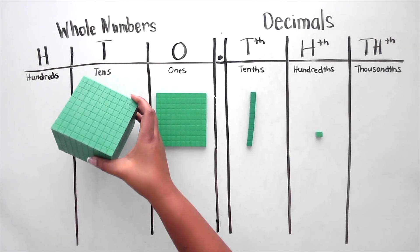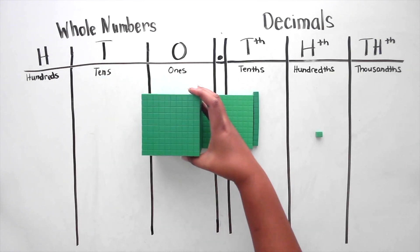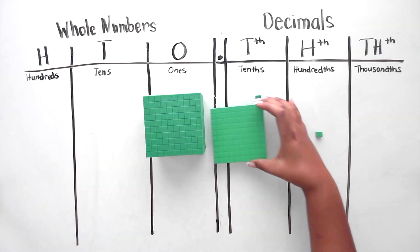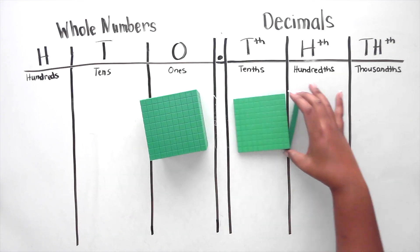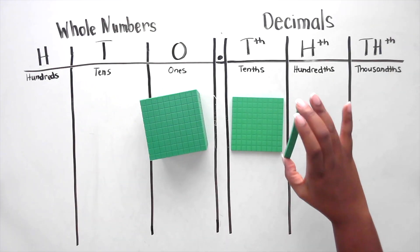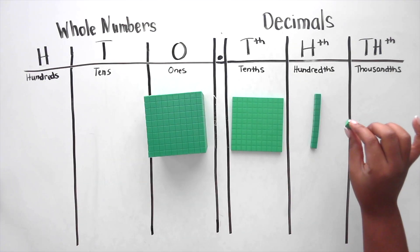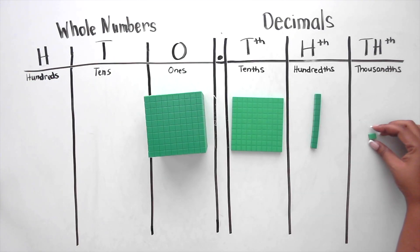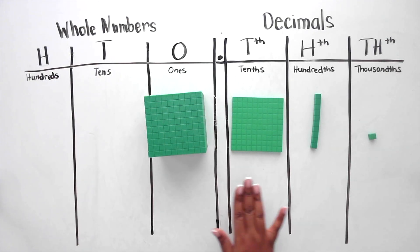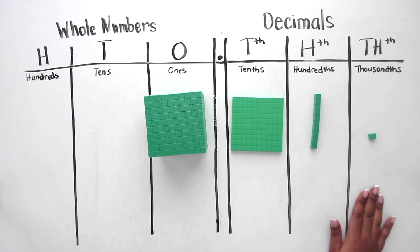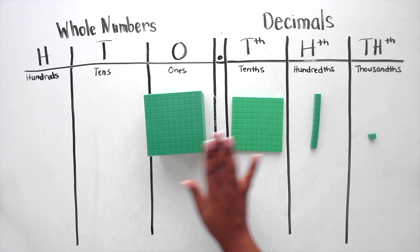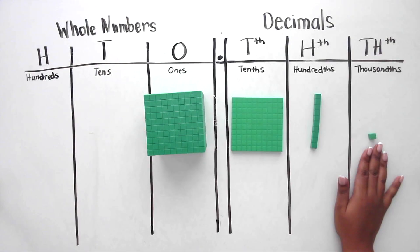If the flat becomes one whole, then the rod represents a tenth and the unit cube represents a hundredth. And if the large cube is the whole, then the flat is a tenth, the rod is a hundredth, and the unit cube is a thousandth. Notice how the pattern continues. Each time we move one place to the right, the block becomes 10 times smaller. That's the heart of the decimal place value system.